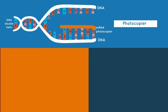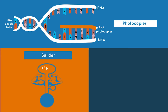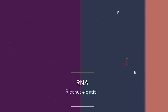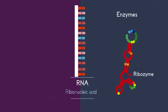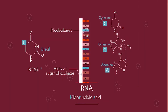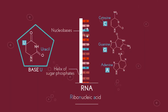For many years we thought RNA acted as mRNA — the DNA photocopier — tRNA as the protein folder, and rRNA found in ribosomes. However, RNA can also act as enzymes to speed up chemical reactions. And in many viruses, they have RNA instead of DNA; RNA carries the genetic code in those viruses.